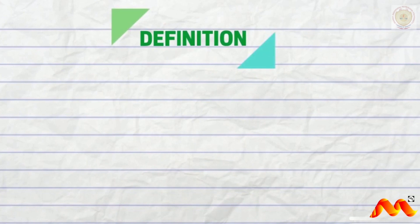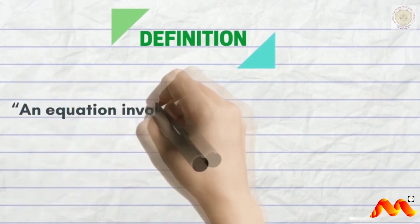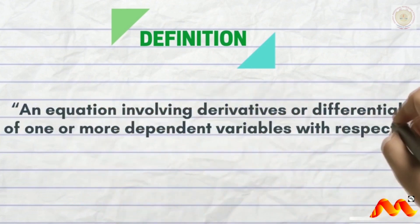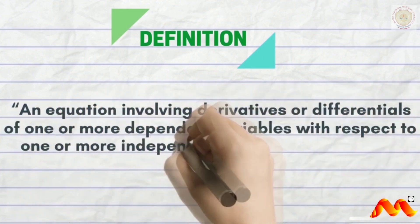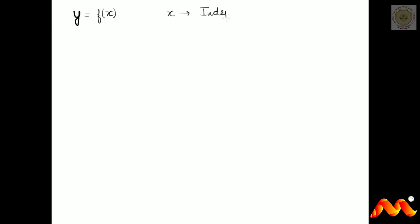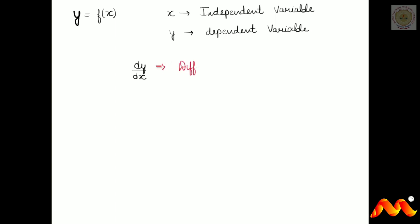So what are differential equations? An equation involving derivatives or differentials of one or more dependent variables with respect to one or more independent variables is called a differential equation. For y = f(x), X is the independent variable and Y is the dependent variable. An equation containing X and the derivative of Y with respect to X, that is dy/dx, is known as a differential equation.